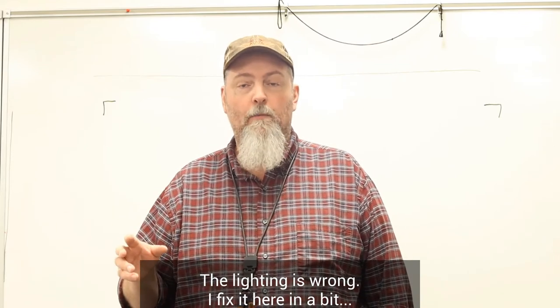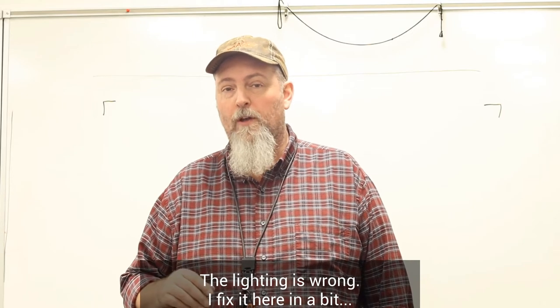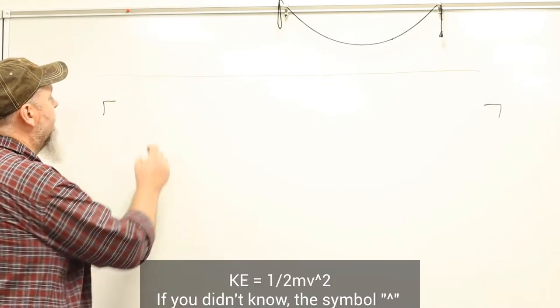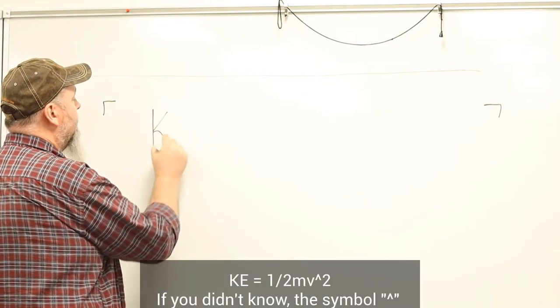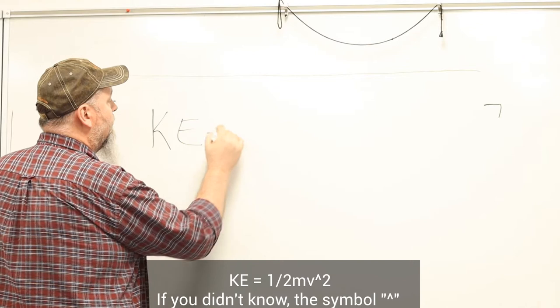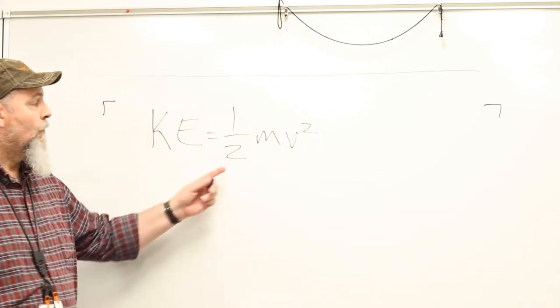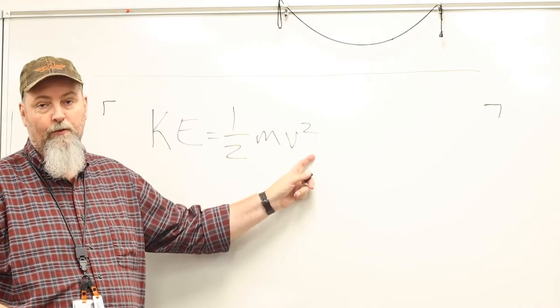I wanted to break that down over a couple of short videos and actually work through a couple of problems for you. We're going to start off with kinetic energy. The equation for kinetic energy is 1/2 mass velocity squared.